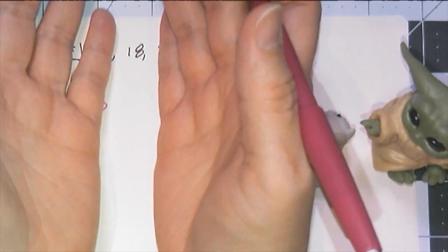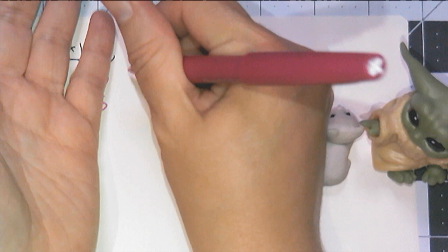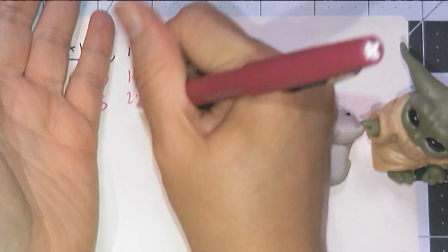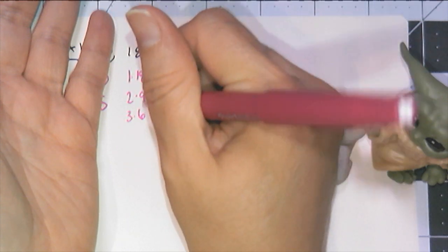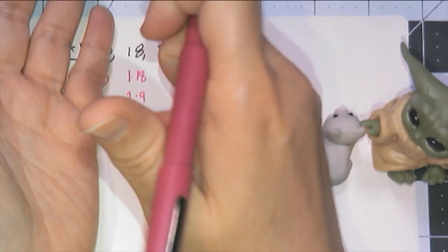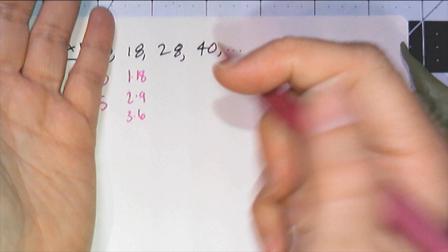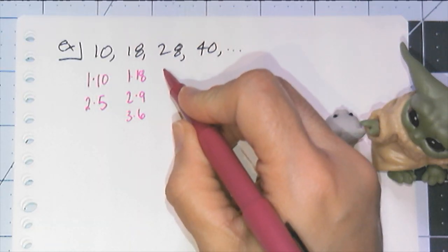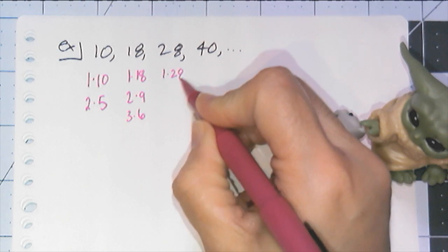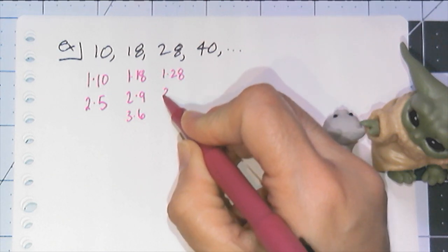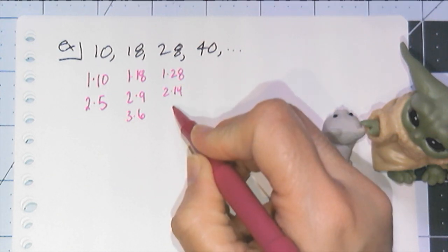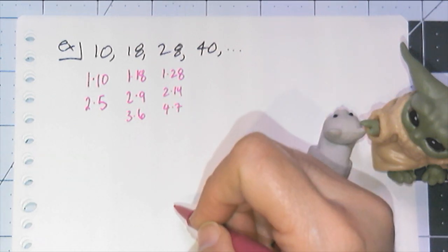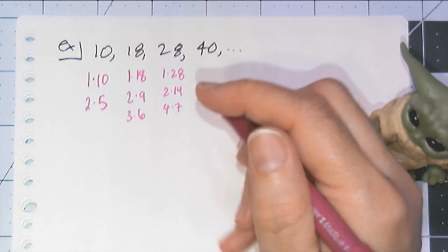Now I'm going to go to 18 and do the same thing. It can be 1 by 18, it could be 2 by 9, or it could be 3 by 6. I'm doing this systematically, going through each of the integers, finding the factors that apply. For 28, I can have 1 times 28, 2 times 14, 3 does not go into there, 4 does, it's 4 times 7, and 5 and 6 don't, so those are the only combinations I have for 28.